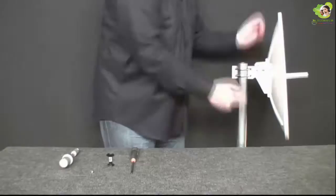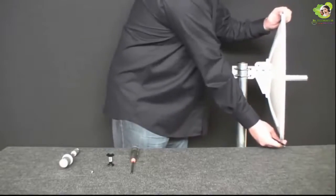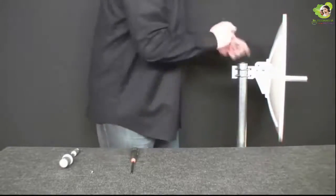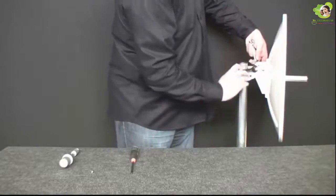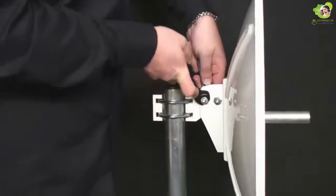Before tightening the main screws, set the required elevation of antenna. Tighten both main screws of holder by using two clues number 13.